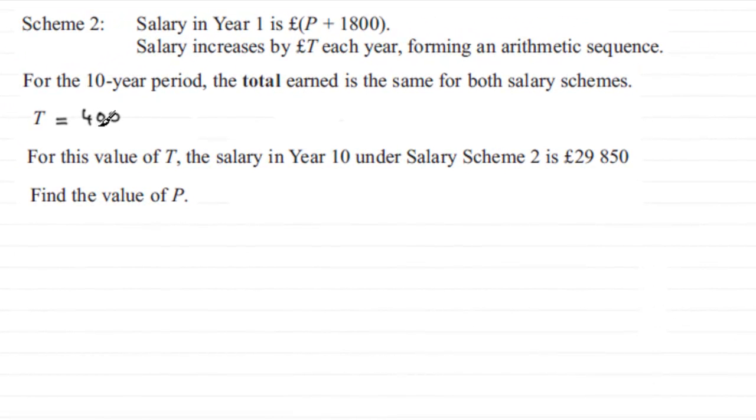In the previous part we found the value of T to be 400. We're now told that for this value of T, the salary in year 10 under Salary Scheme 2 is £29,850, and we've got to find the value of P.